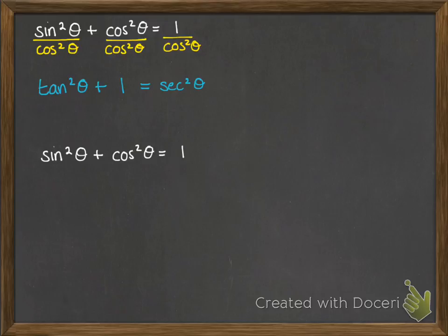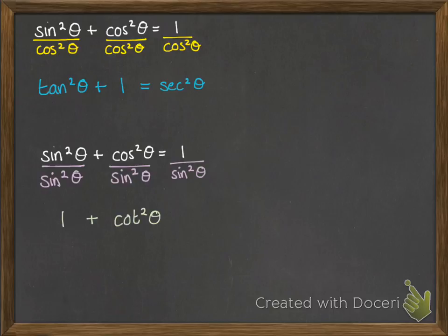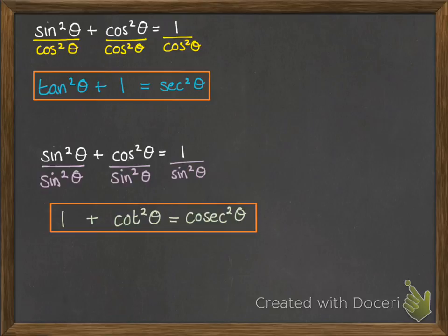Starting with that same identity again but dividing through by sine squared theta, something similar happens. We get 1; cos squared over sine squared is cot squared, because tan is sine over cos so the reciprocal is cot squared; and 1 over sine squared is cosec squared. So we get 1 plus cot squared theta equals cosec squared theta. Those are really important — make sure you write down and memorise them.